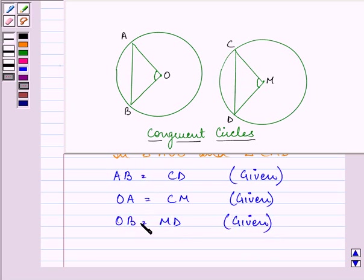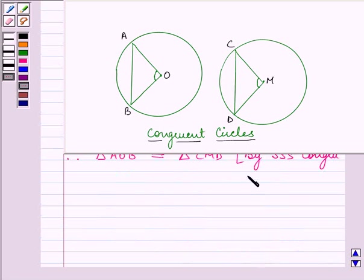So by SSS condition we can say that triangle AOB is congruent to triangle CMD by SSS congruency rule.